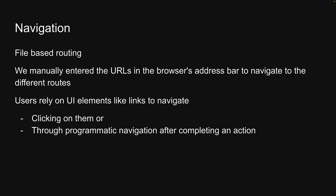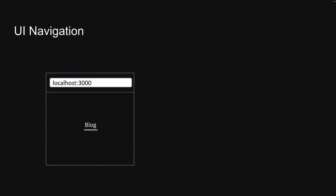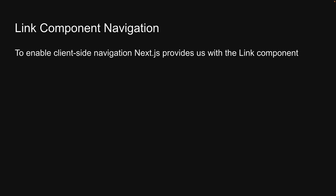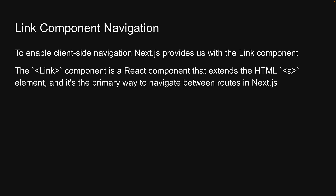Let's learn how to do the same with Next.js. Typically, users rely on UI elements like links to navigate, either by clicking on them or through programmatic navigation after completing an action. To enable client-side navigation, Next.js provides us with the Link component. The Link component is a React component that extends the HTML anchor element, and it is the primary way to navigate between routes in Next.js. To use it, we need to import it from next/link.